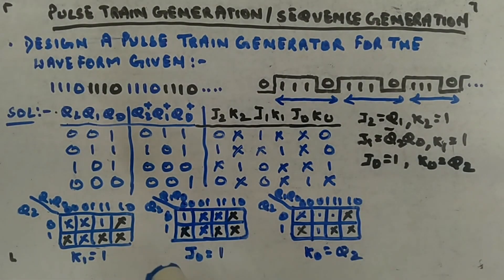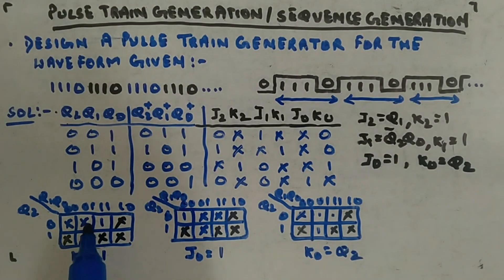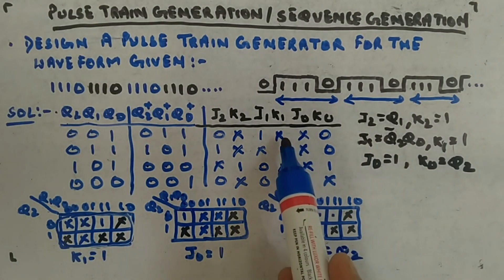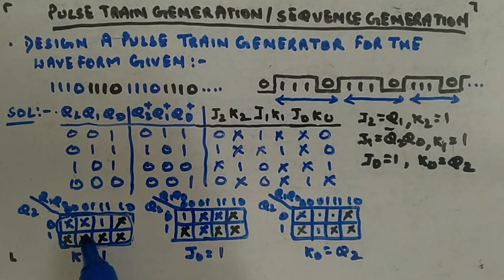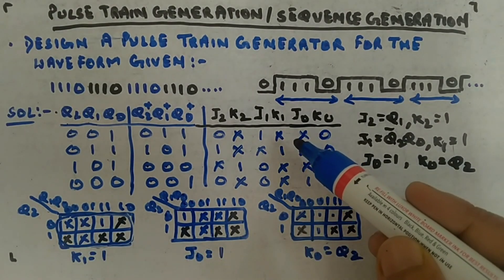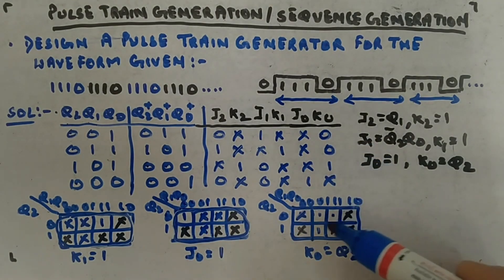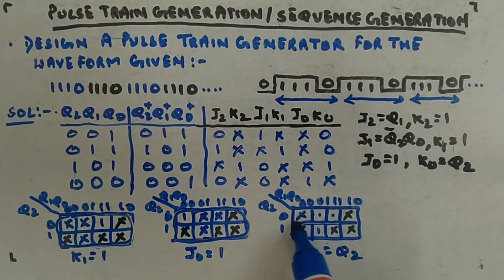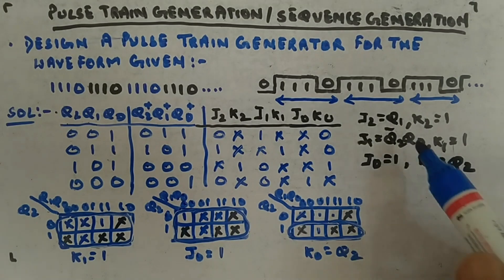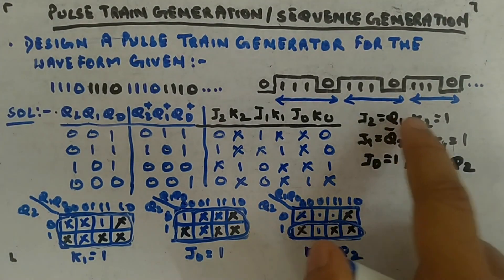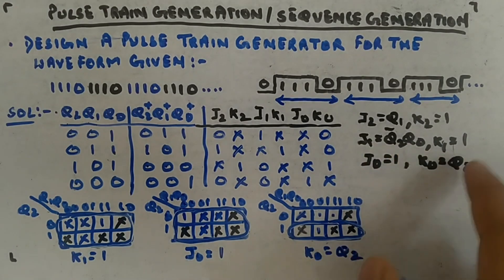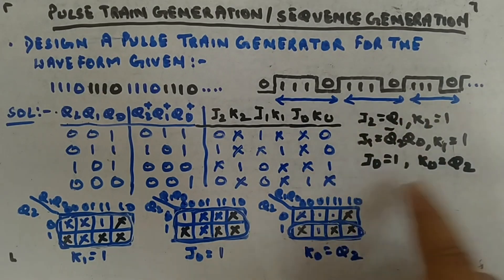For K1, the K-map has entries that group to give K1 = 1. For J0, the grouping of the entire map gives J0 = 1. For K0, a group of four is visible, giving K0 = Q2. So the final expressions are: J2 = Q1, K2 = 1, J1 = Q2_bar · Q0, K1 = 1, J0 = 1, K0 = Q2.